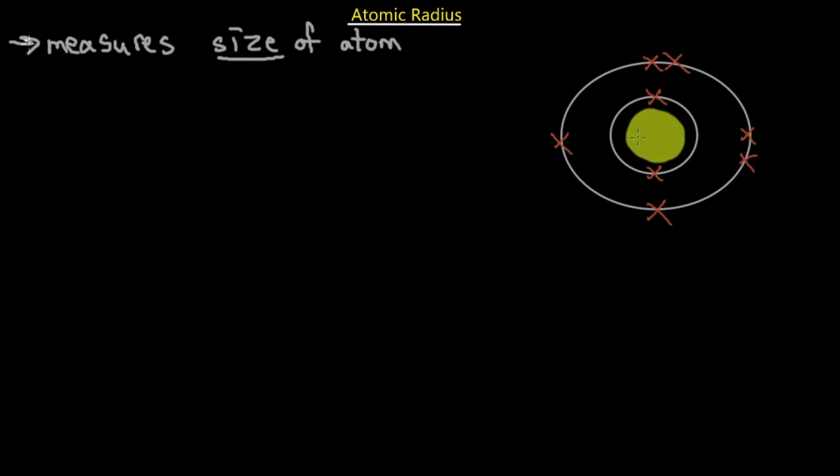The first thing we're going to look at is the atomic radius. This periodic trend simply measures the size of the atom, done by measuring the distance from the center of the nucleus to the most outer electron. The further the distance between the outermost electron and the nucleus, the bigger the atom.